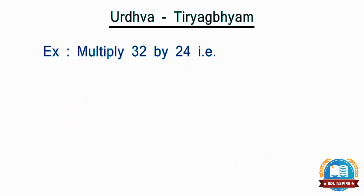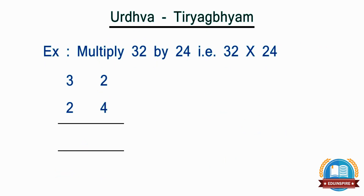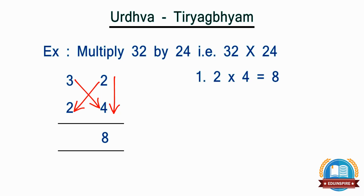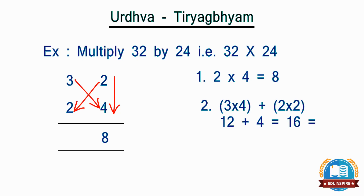Now let's take another example of a two digit number, i.e. 32 by 24. We will follow exactly the same steps as the previous example. Step 1: multiply vertically the rightmost digits, i.e. 2 by 4, which becomes 8. Step 2: multiply diagonally, i.e. 3 by 4 and 2 by 2, the sum of which becomes 16. Here we see the total is a 2-digit number, so we will retain 6 as the second digit of the answer and carry 1 to the left side.